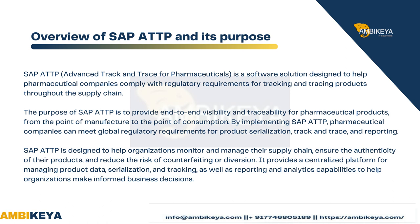From the point of manufacturer to the point of consumption, the product should be completely traceable. If any product is expired or damaged, we should be able to track it so we can discard or process it appropriately, restricting misuse. By implementing ATTP, pharma companies can meet global regulatory requirements for product serialization, track and trace, and reporting.